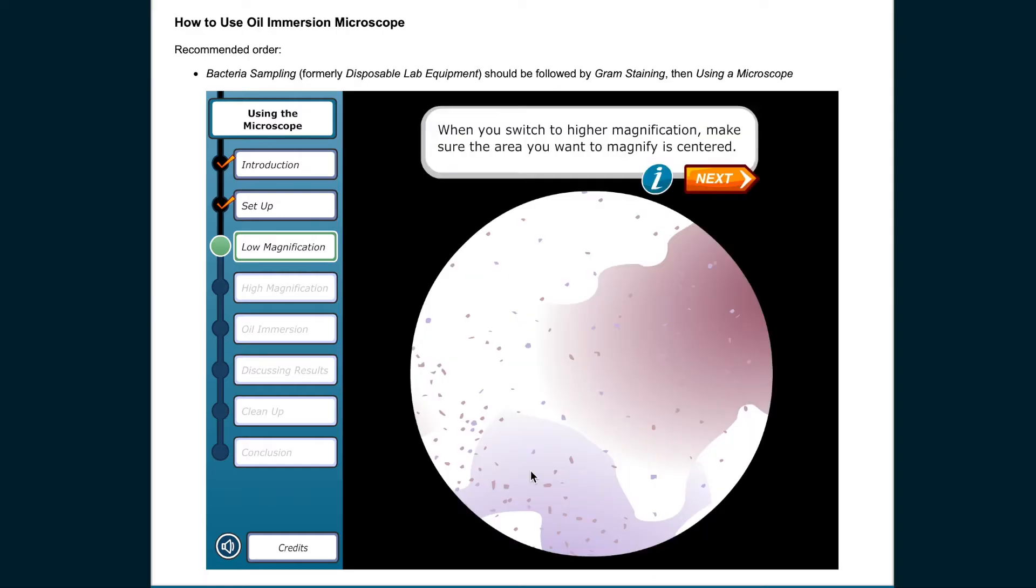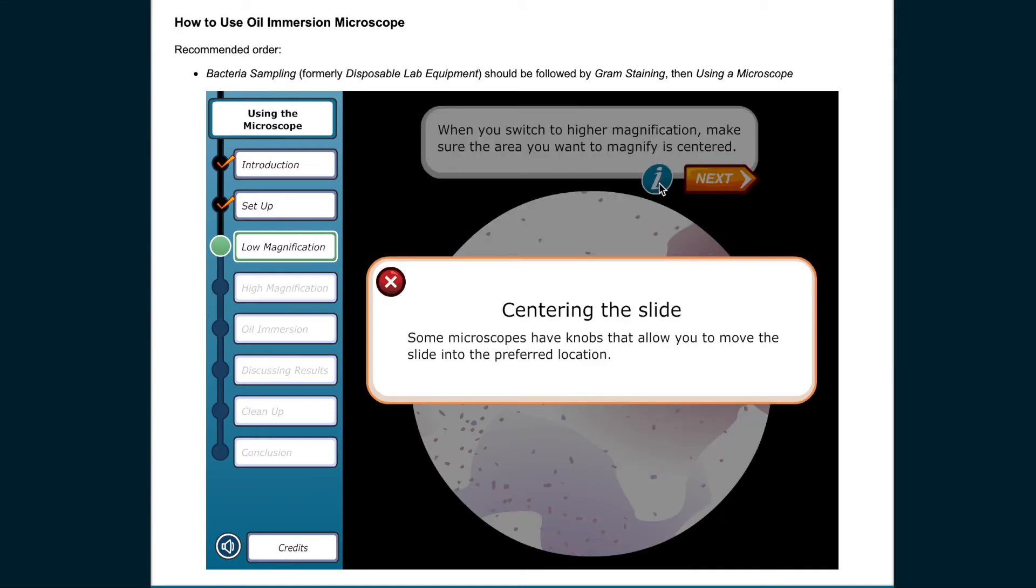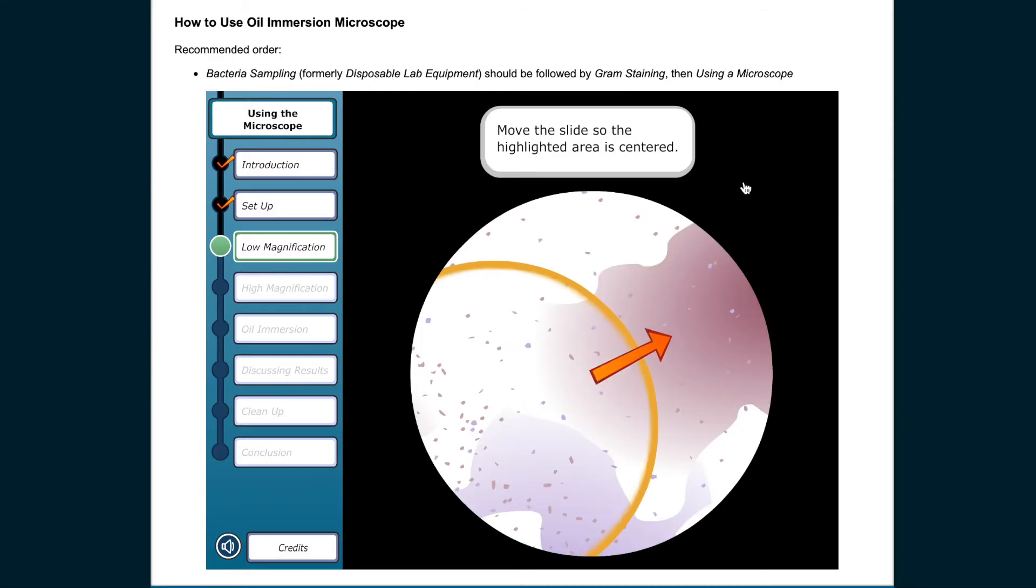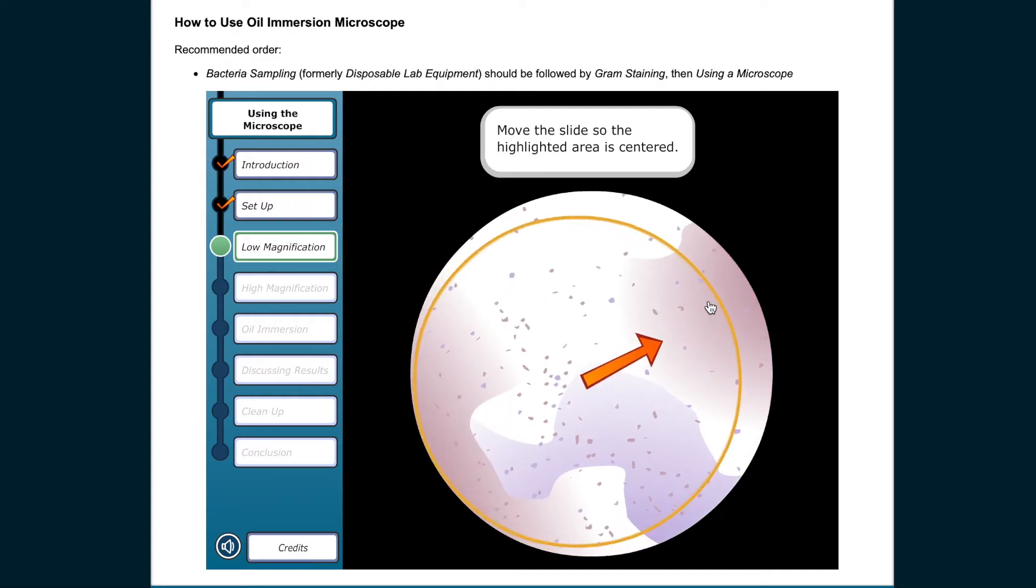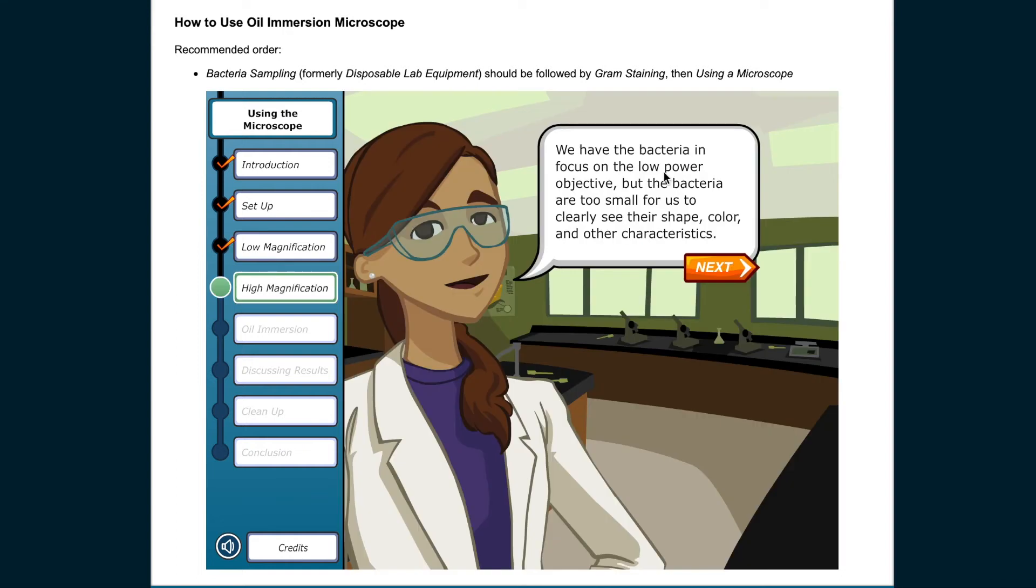When you switch to higher magnification, make sure the area you want to magnify is centered. Some microscopes have knobs that allow you to move the slide into the preferred location. We have the bacteria in focus on the low-power objective, but the bacteria are too small for us to clearly see their shape, color, and other characteristics.